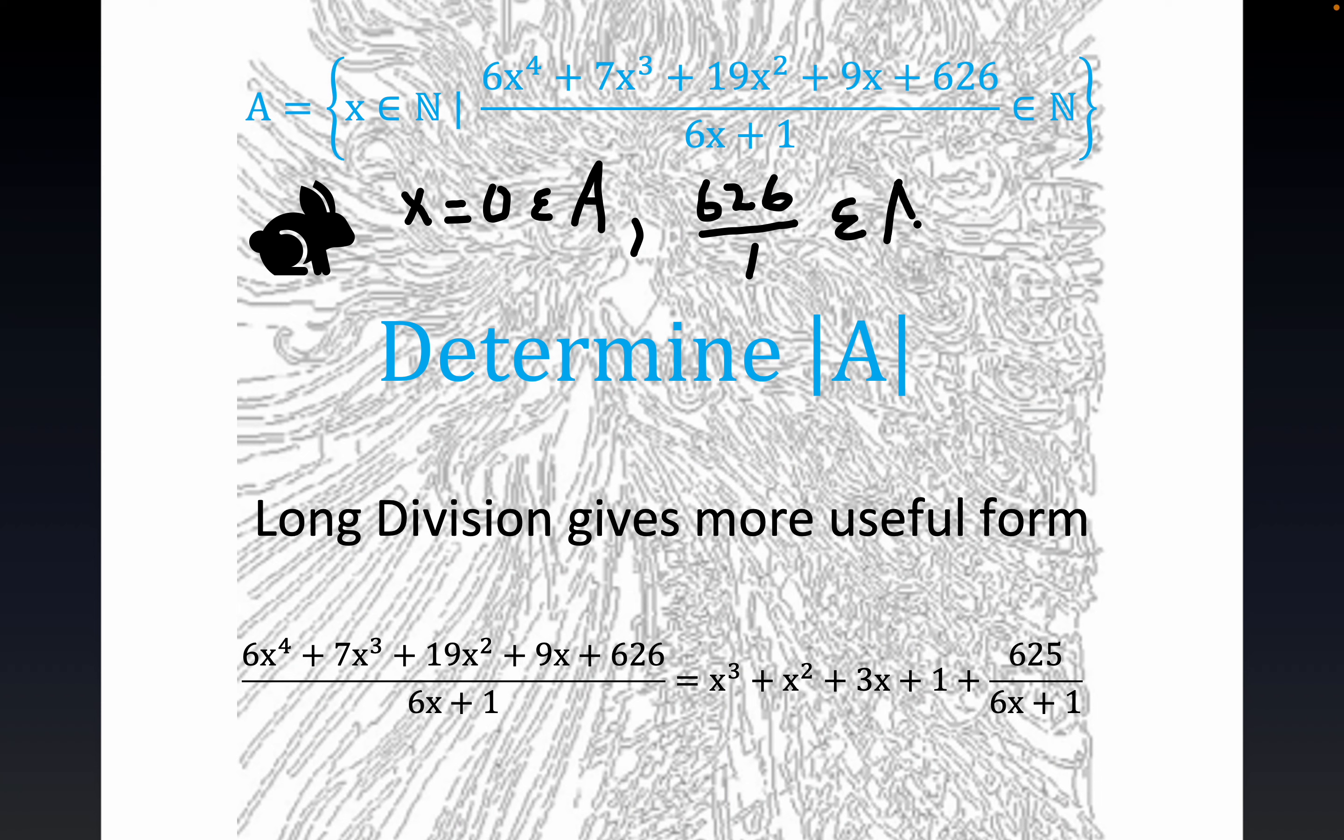The natural numbers are just the positive integers, not including zero. So are there any others, though? That's the question. That's what we're supposed to do here, is determine the cardinality. This means size. The absolute value bars connote size.